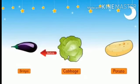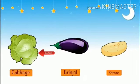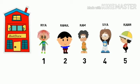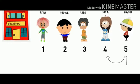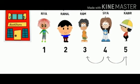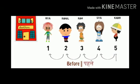Let's reverse the position of vegetables now. You can see that cabbage comes before brinjal. Let's understand by one more example. There are five children in this figure: Riya, Rahul, Ram, Sia, and Kabir. Now tell me, who is standing before Kabir? This is Sia — Sia is standing before Kabir. Ram is standing before Sia, Rahul is standing before Ram, and Riya is standing before Rahul.